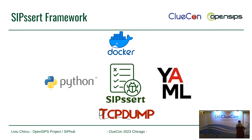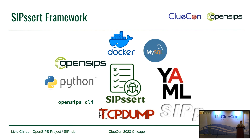Let me show you a bit about some technologies. It's written in Python 3. The configuration part is done in YAML. All of the entities participating in the test flows are Docker containers. TCP dump is used for reporting because at the end of each test, you want to have access to the data, especially when it goes wrong, to troubleshoot what part failed. There are various containers which are readily available already - of course OpenSIPs and the CLI, but also a CP container, MySQL container, and many others.